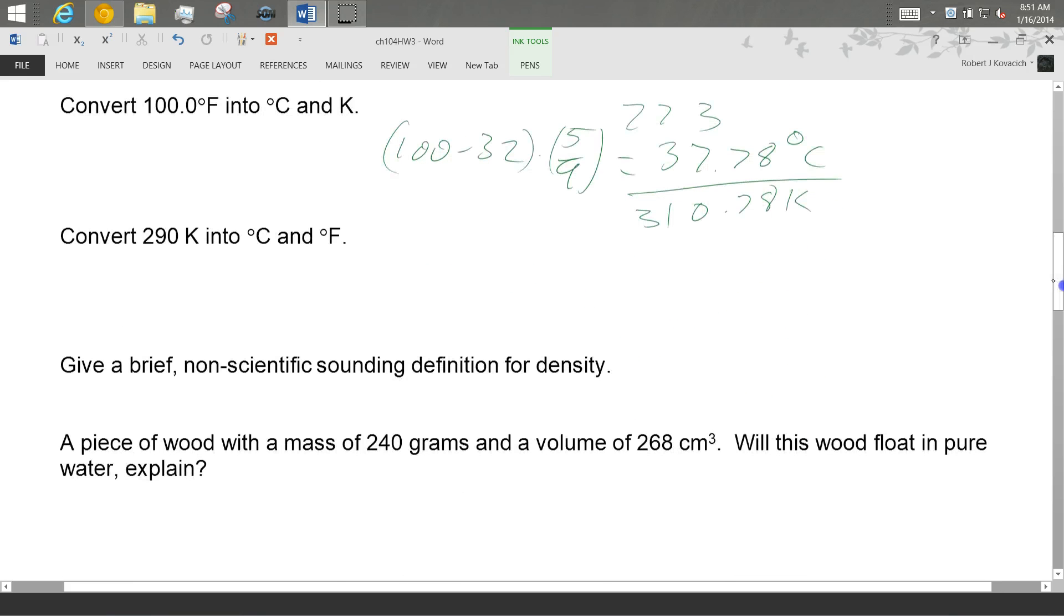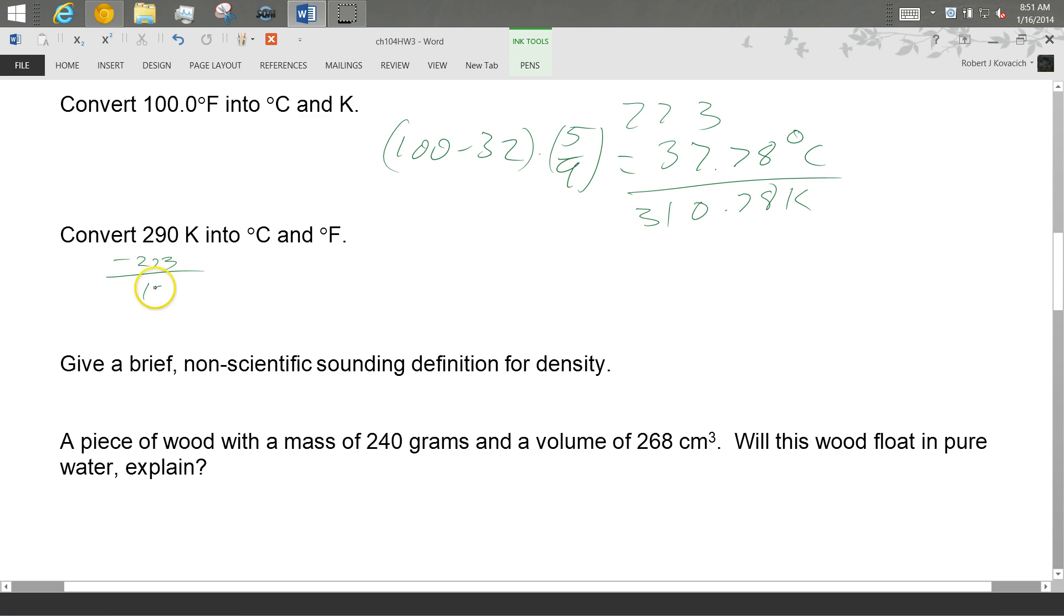100 minus 32, times 5, divided by 9, 37.78 degrees Celsius. I'm going to add 273, and I get 310.78 Kelvin. And then, going the other direction, I'll subtract off 273 from this, and I'll get 17 degrees Celsius. So at 17 degrees Celsius, what kind of Fahrenheit number should you expect? Do you remember what room temp was? It was around 20. So this should be somewhere around room temperature. So I have 17 times 9, divided by 5, plus 32. I got 62.6 degrees Fahrenheit.